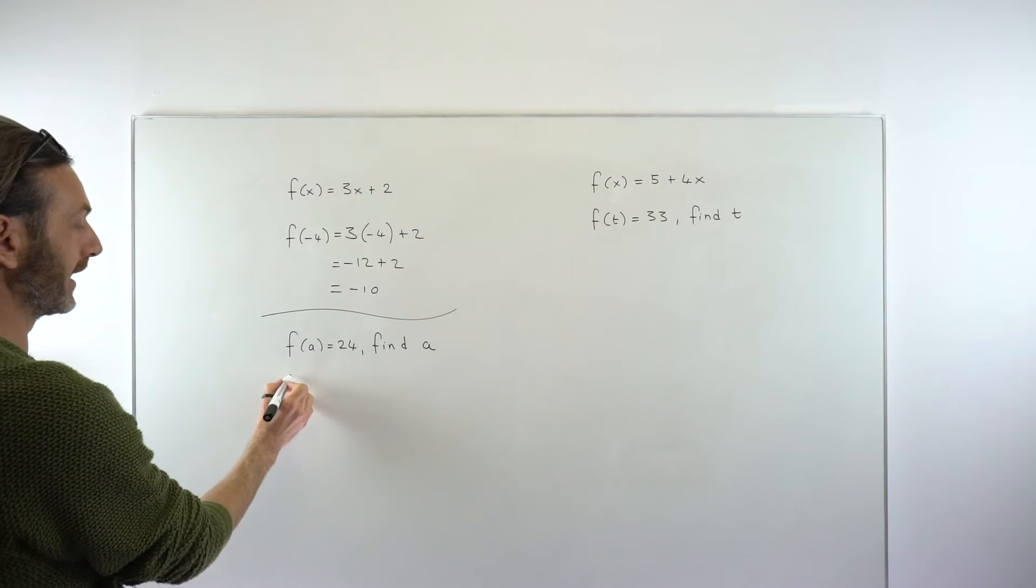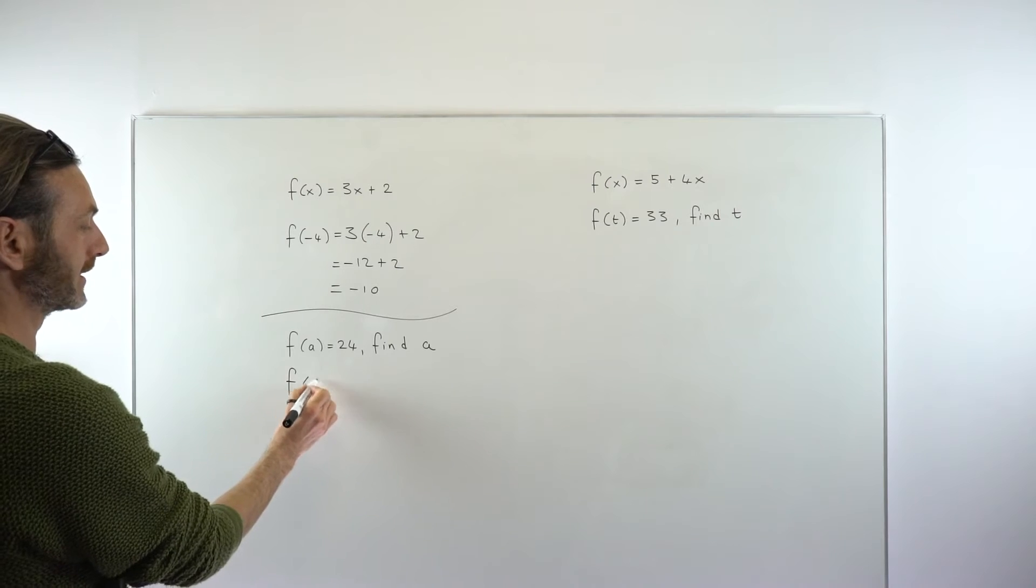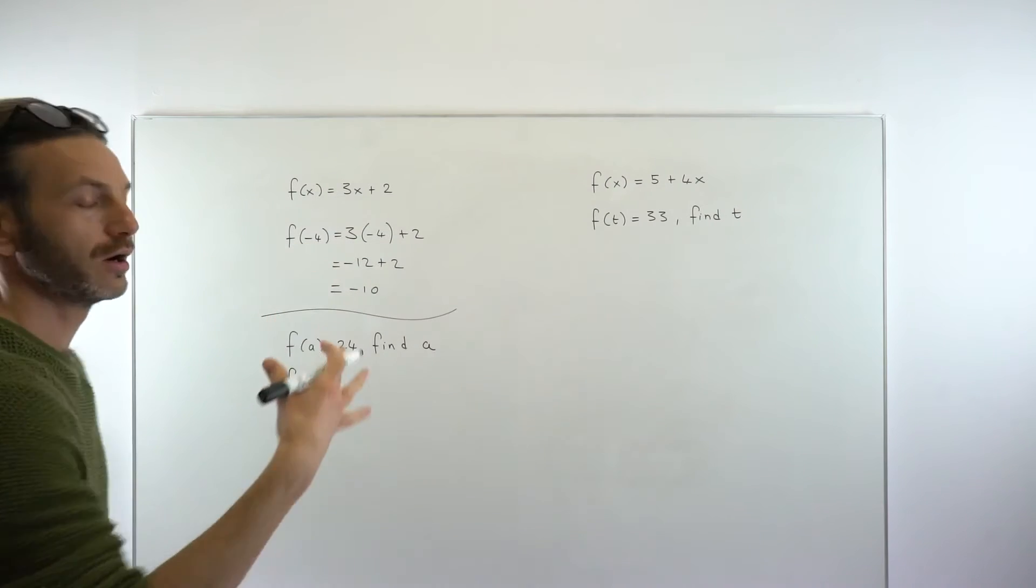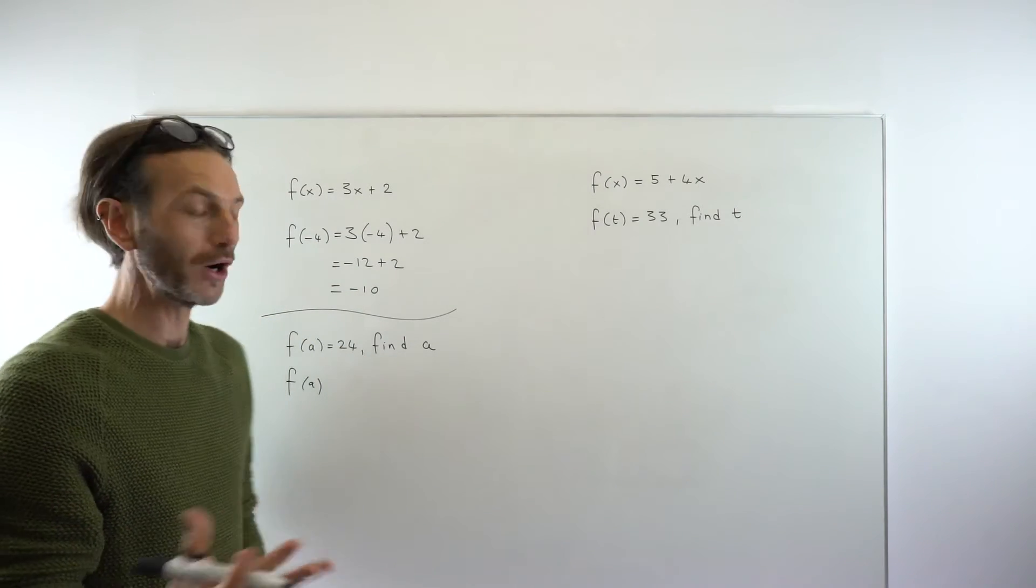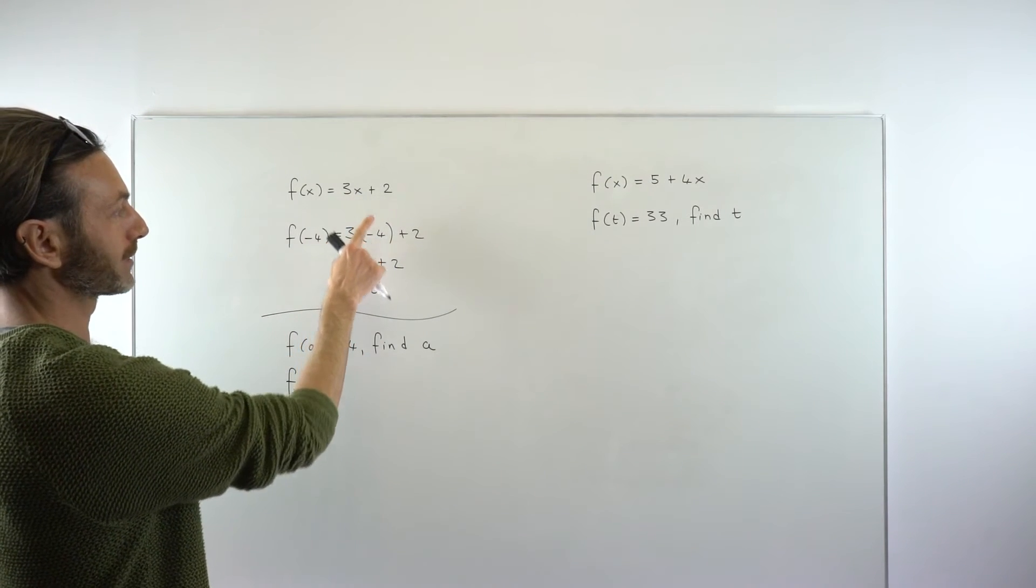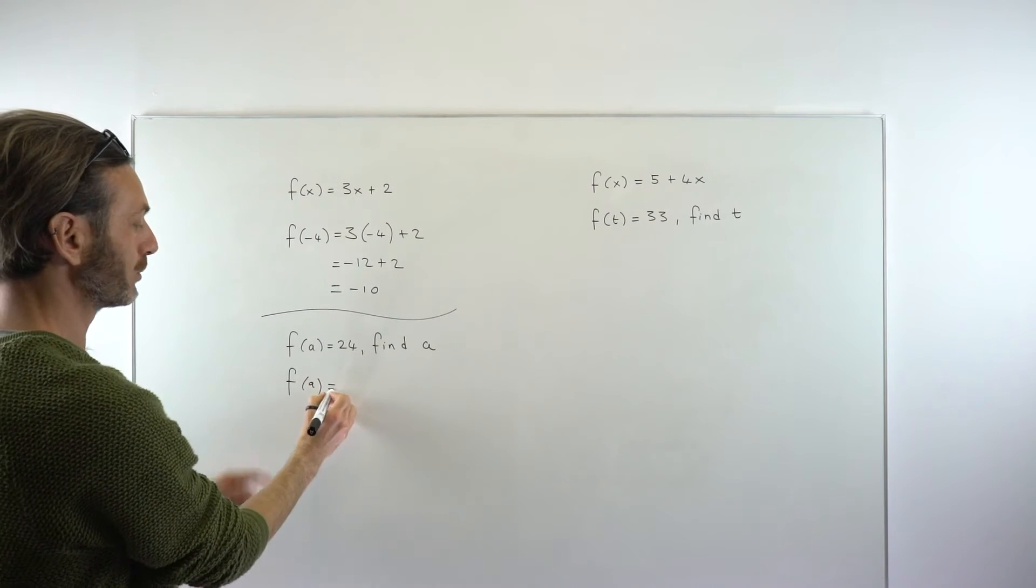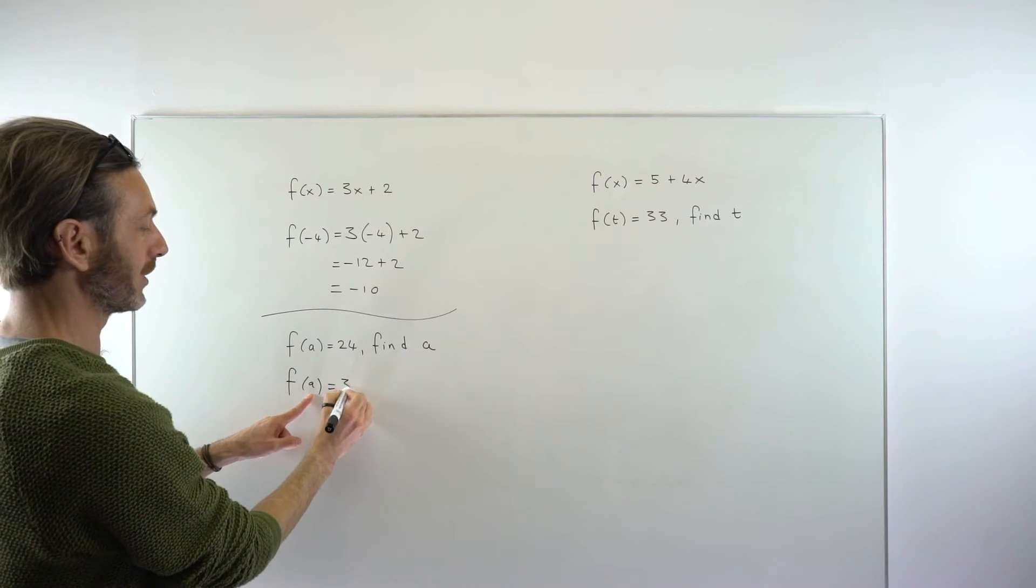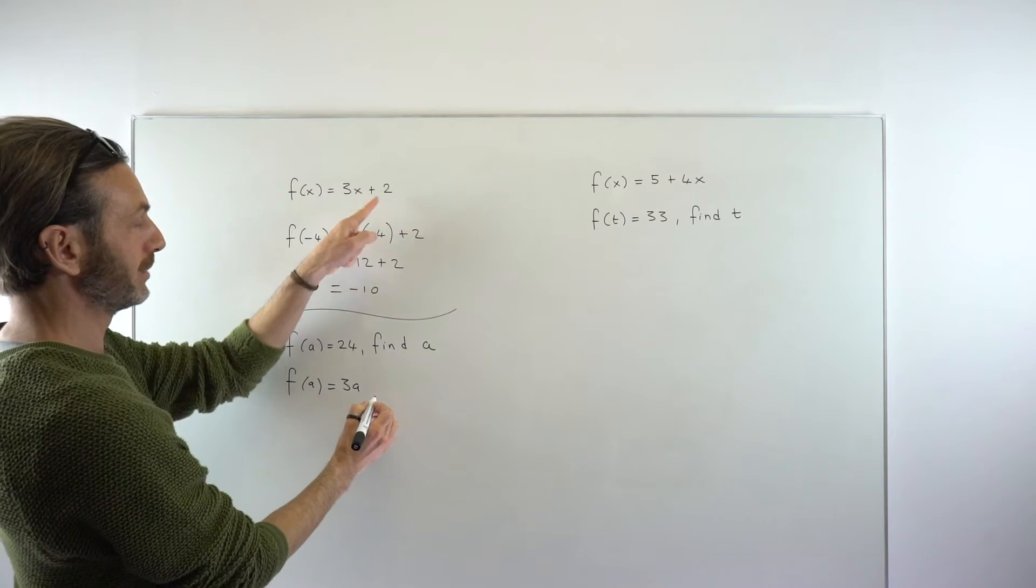The way to do it is just to think of this: if you're evaluating f of a, that's just like evaluating f of minus 4 or f of any other number. You're just going to put whatever's here into the function. So in the same way we replaced that x with minus 4, now we're just going to replace it with a. So that becomes 3a plus 2.